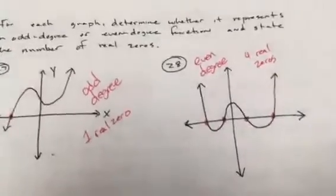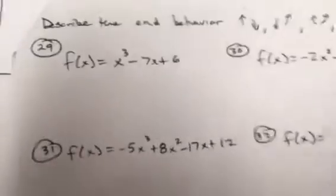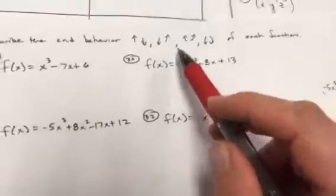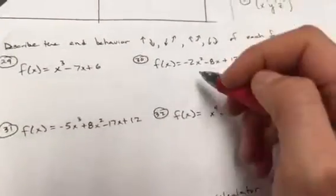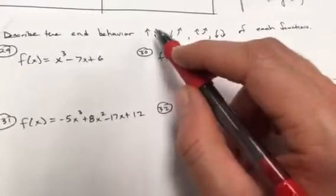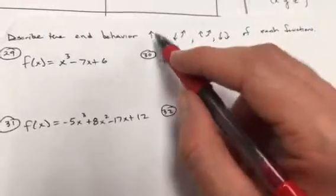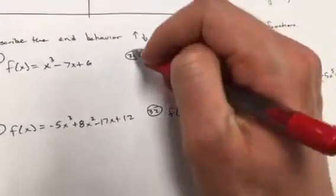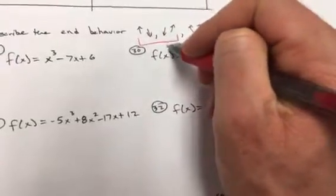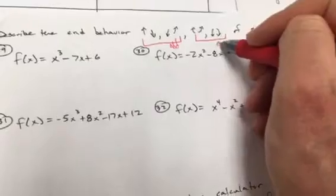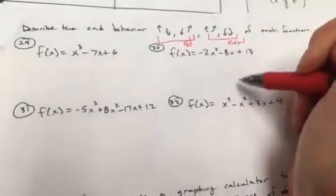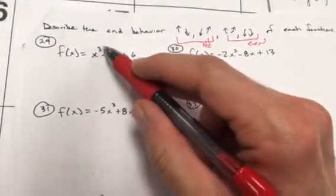For problems 29 through 42, describe the end behavior. Just like on your quiz, I'll give you four drawings. If the end behavior is in opposite directions, those two are for odd degree. If the end behavior is in the same direction, those two are for even degree. The highest power here is 3, so this one is odd degree.